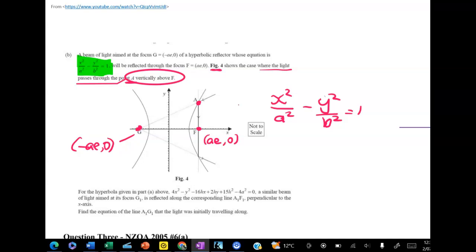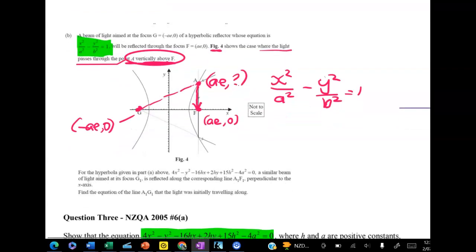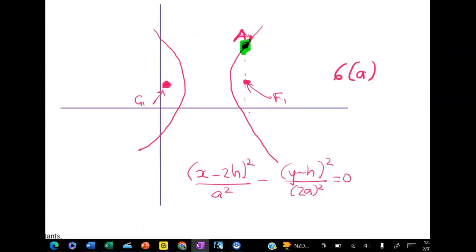This is point a and the light is being aimed at point g and then it's going to reflect through here. It's really important that a is vertically above f, that means that we know that the x coordinate is going to be ae but we don't yet know the y coordinate. So this is going to be the setup for any hyperbola and now we're asked to apply it to the hyperbola that we found in 6a.